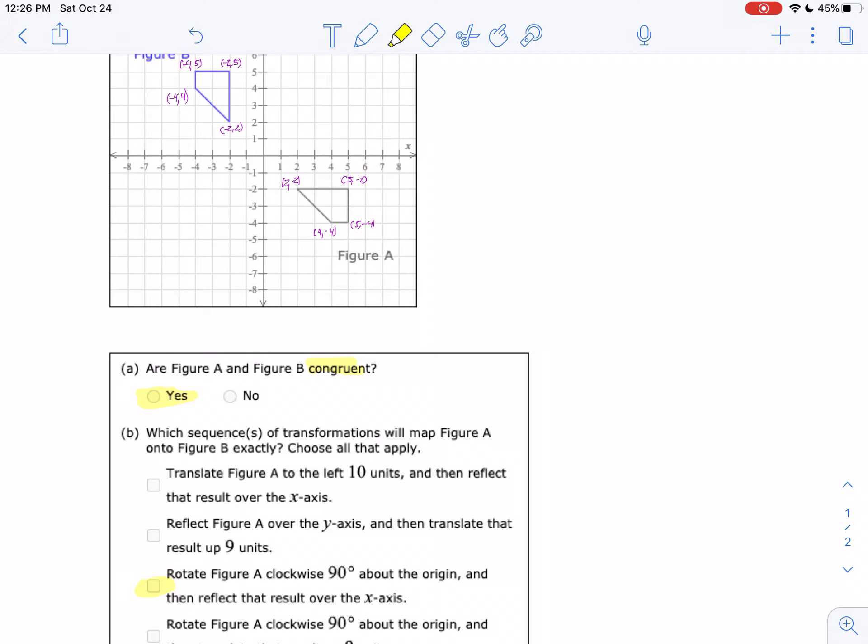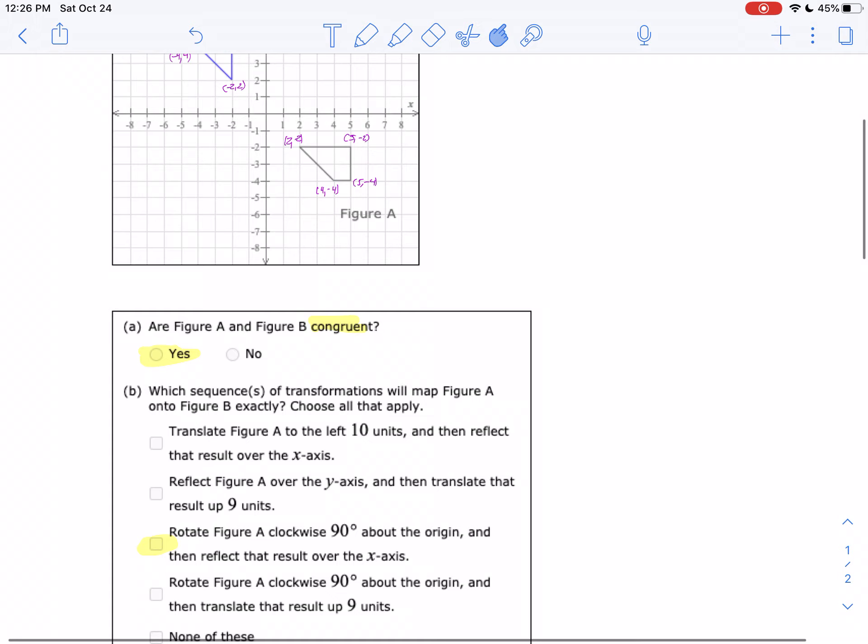Let's take a look at the fourth one just to make sure. If I rotate it 90 degrees, it will be pointing up, and then I translate it up. So it looks like the third one is a possibility, or is it none of them?